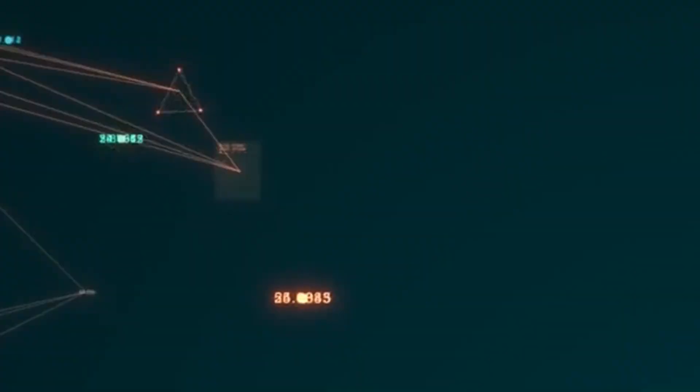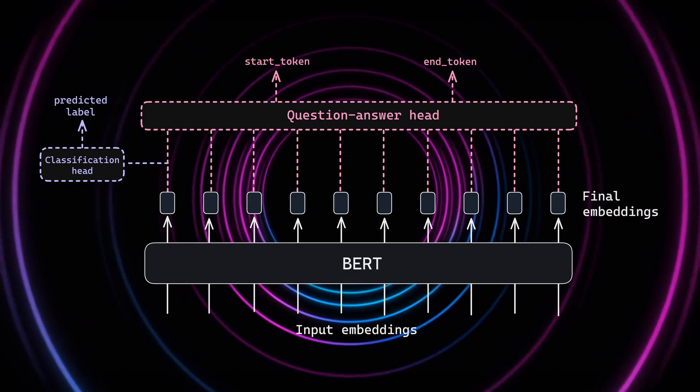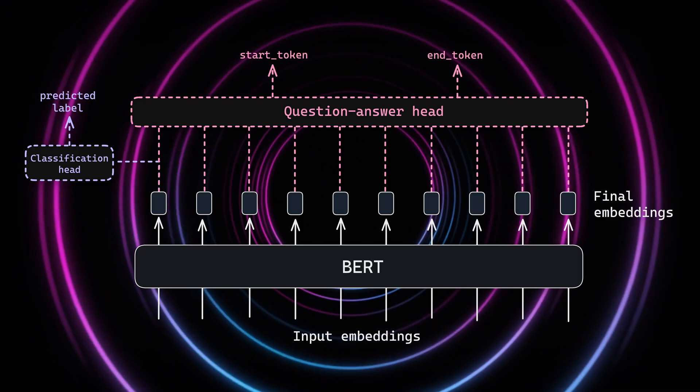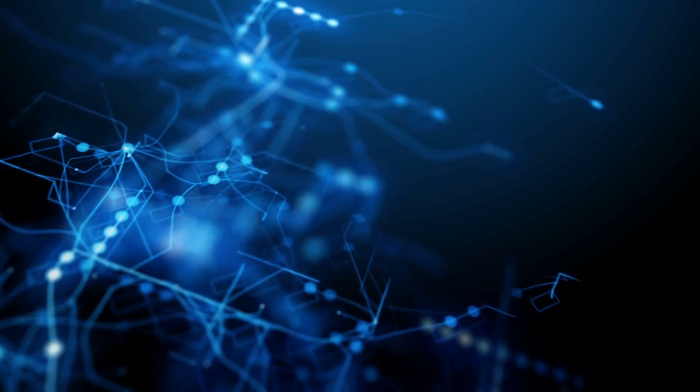The separation between these tasks has over time decreased. With the introduction of transformer models, it became the case that you would pre-train a single big language model like BERT, and then perform transfer learning in order to just change a couple of layers at the end of the network to adapt it to different tasks. And with the more recent adoption of large language models, the separation between different use cases has decreased even more.